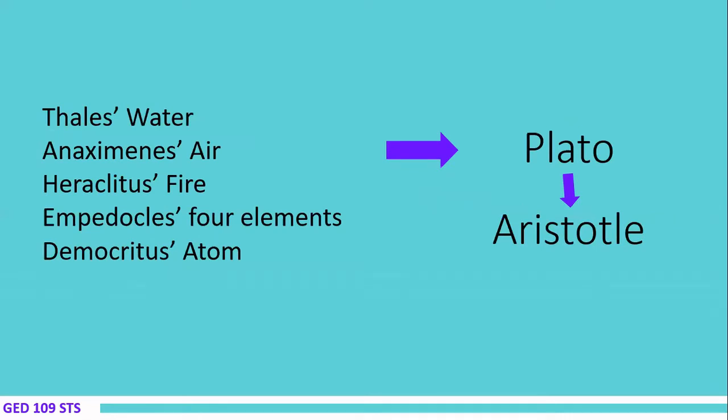Plato wisely combined all the works of presocratic philosophers. Thales said water is the origin of all things. Anaximenes said air. Heraclitus said fire. Empedocles combined the four elements, and Democritus said atom. Plato combined these, believing in four elements including another element, which is atom.